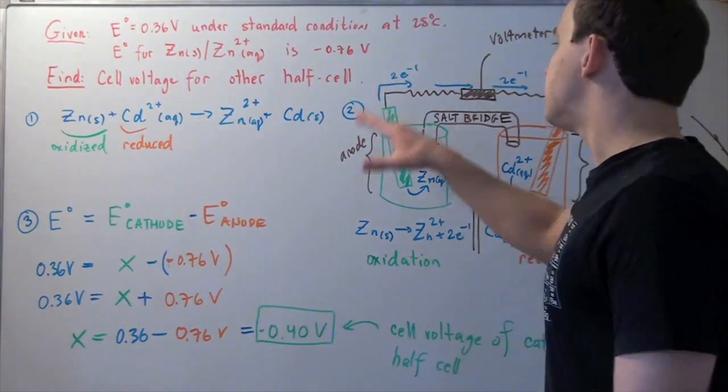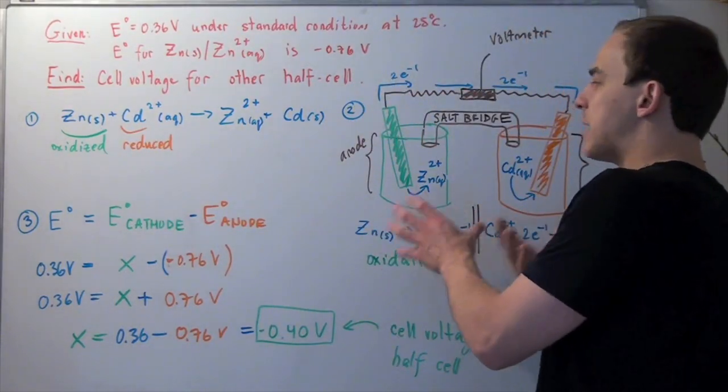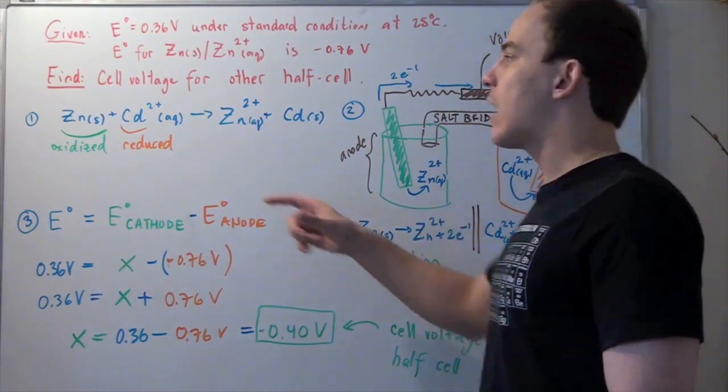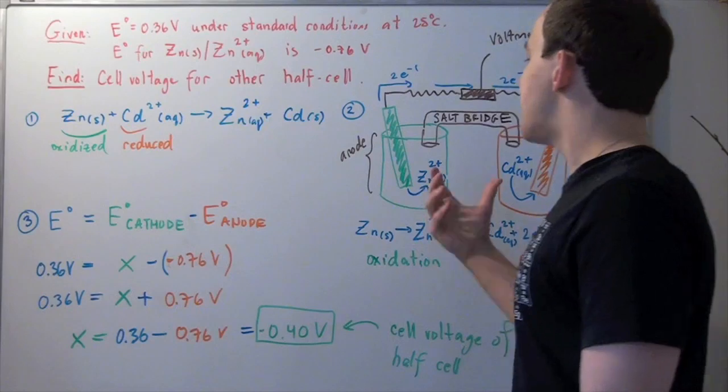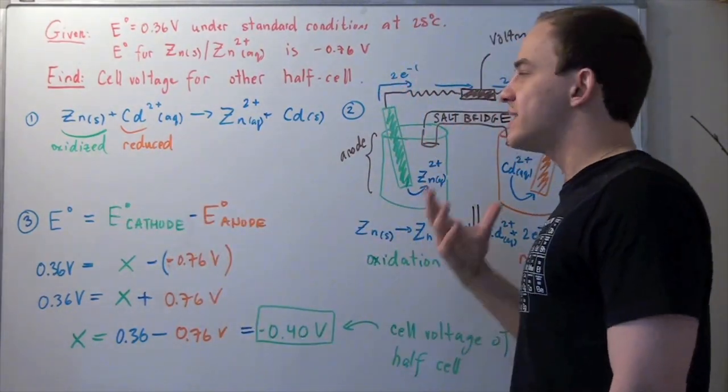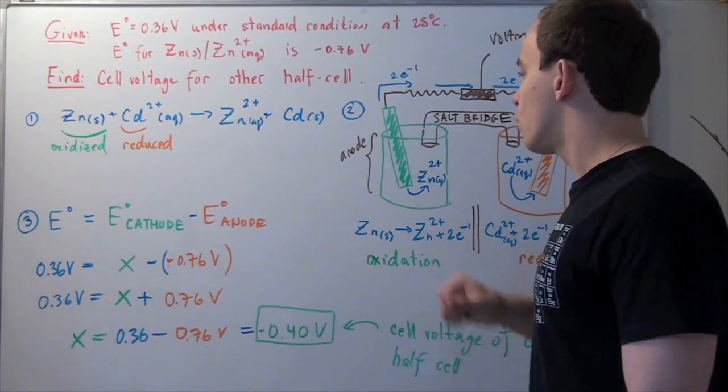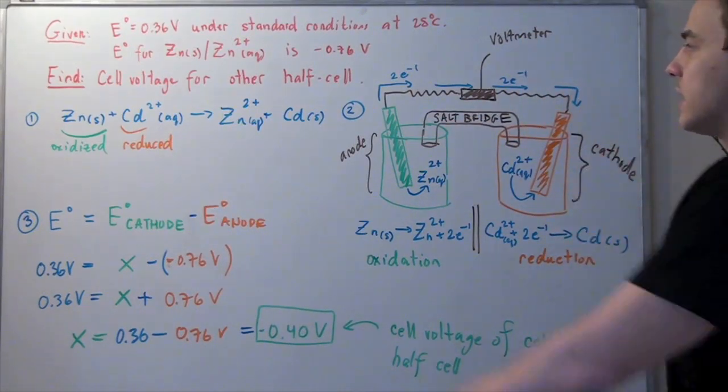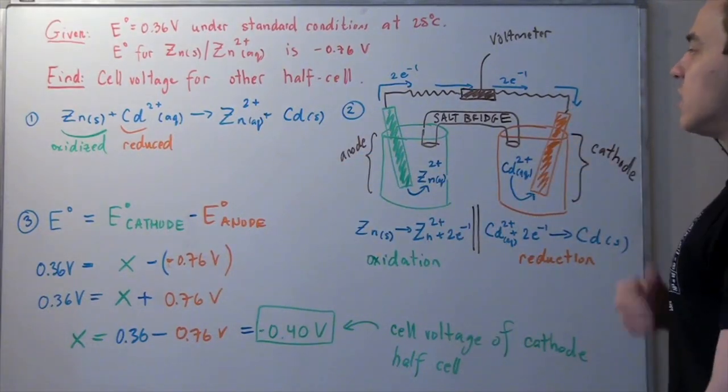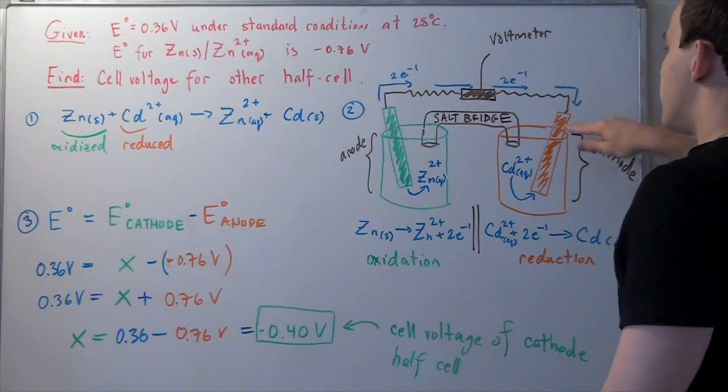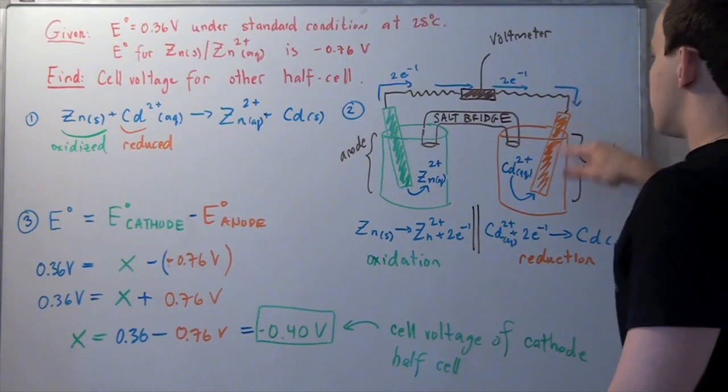In step two, when we draw our electrochemical cell, the first half-cell will contain our zinc solid. That's because zinc is oxidized, and the anode always contains the oxidation reaction. This is our zinc metal. That means this must be our cadmium metal. Electrons will travel via the conductor, via this voltmeter, and into this cathode, into this electrode.